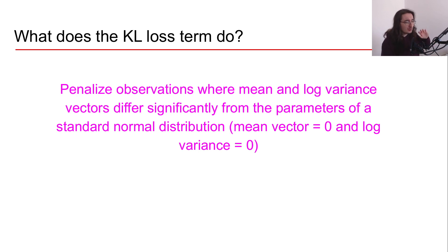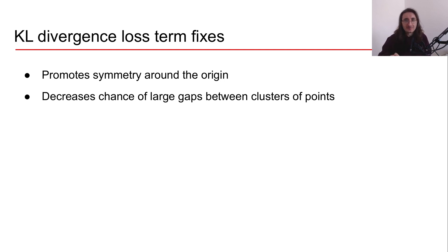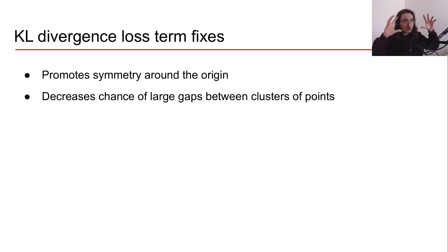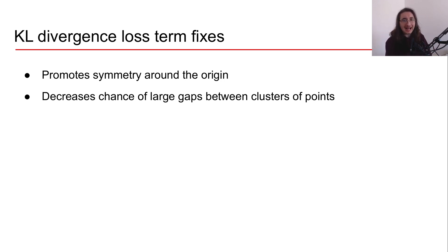Why do we need this extra KL loss term? The Kullback-Leibler divergence term fixes a couple of issues we had with vanilla autoencoders. Because we now have a normal distribution that gets pulled towards the origin of the latent space, we ensure the distribution resembles a standard normal distribution centered around the origin with a symmetrical cluster of points. This achieves two things: we now have symmetry around the origin of the latent space, and we avoid all those gaps among the clusters of points — resulting in something that resembles an almost continuous space around the origin.